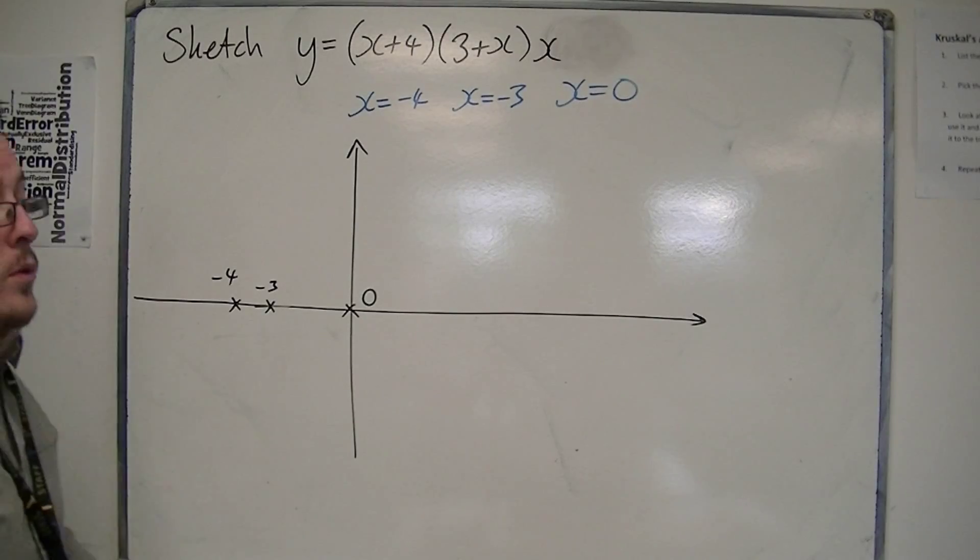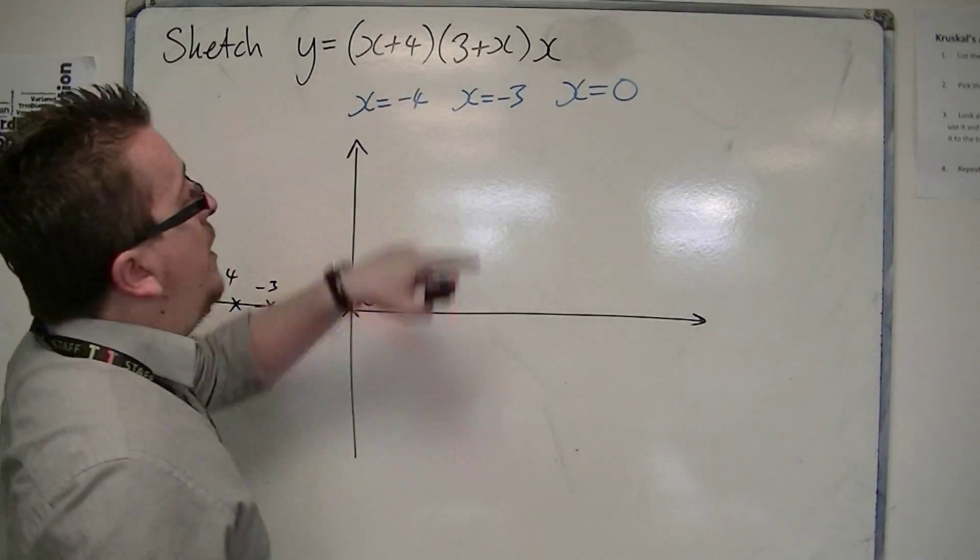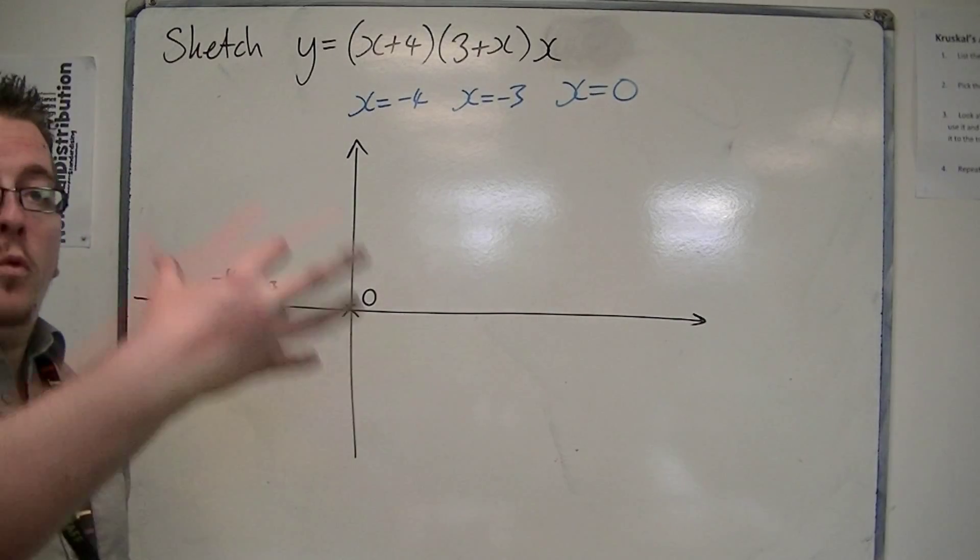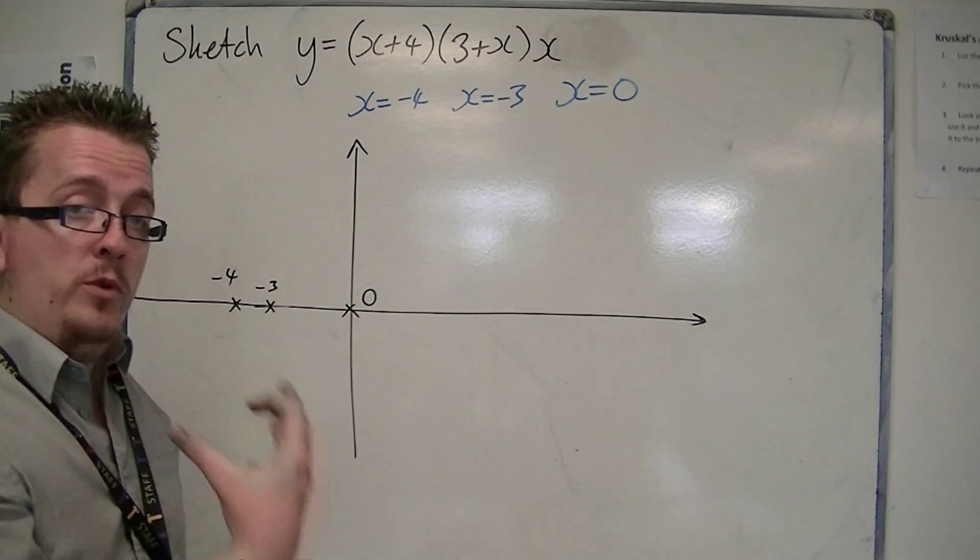Also, because if I multiplied out these three brackets, I would get x cubed, where the number for the x cubed is 1, which is positive.